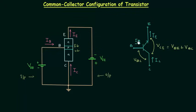The input current is IB and the output current is IE. In the case of output characteristics, we plot the graphical relation between the output current IE and the output voltage VCE for different values of input current IB.